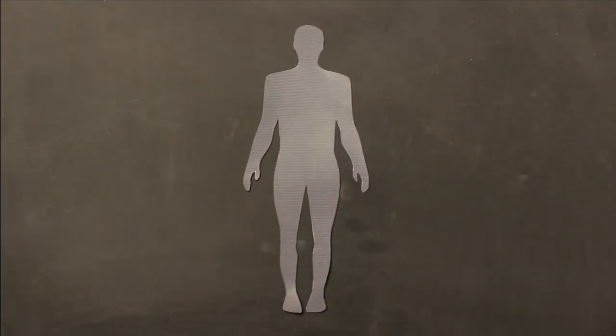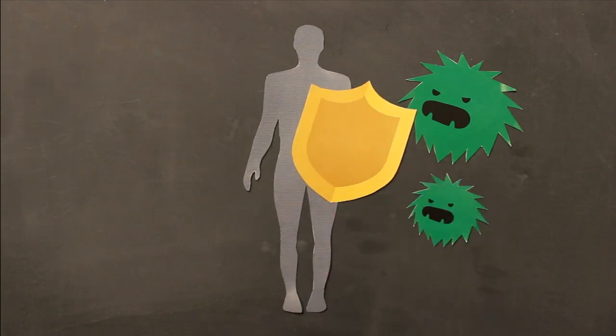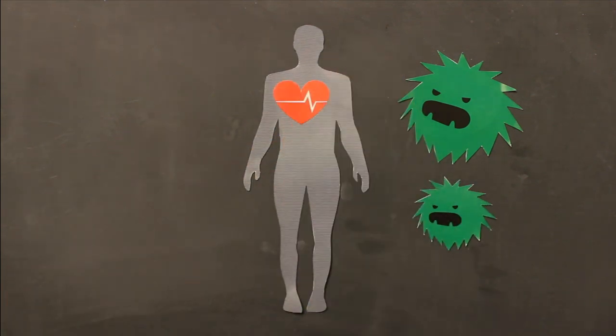Sepsis happens as the body tries to fight off an infection. The body releases chemicals into the bloodstream to battle the invading germs, which can lead to a big drop in blood pressure.